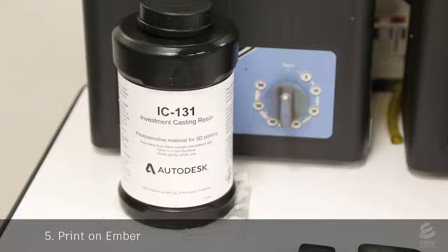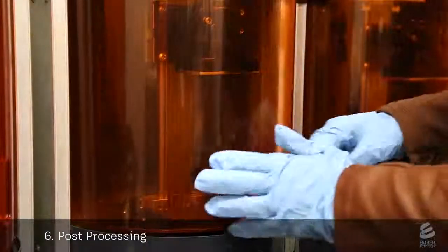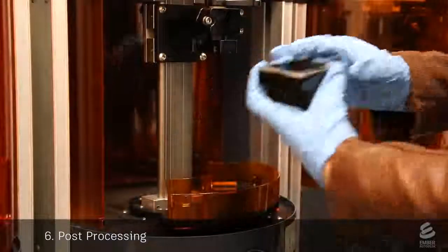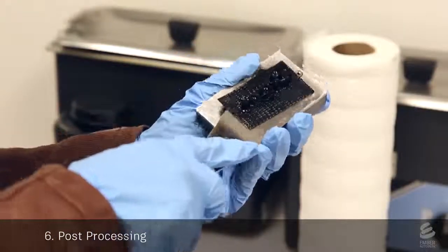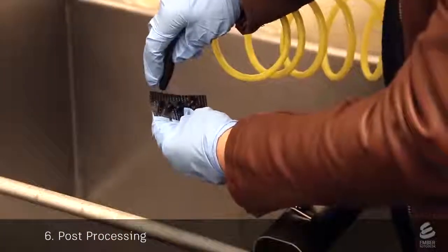Glidewell uses a specially formulated resin, which will completely burn out later in the process. After the print is done, a tech removes the build head from the printer, scrapes off the print, washes it in alcohol, and dries it with an air gun.